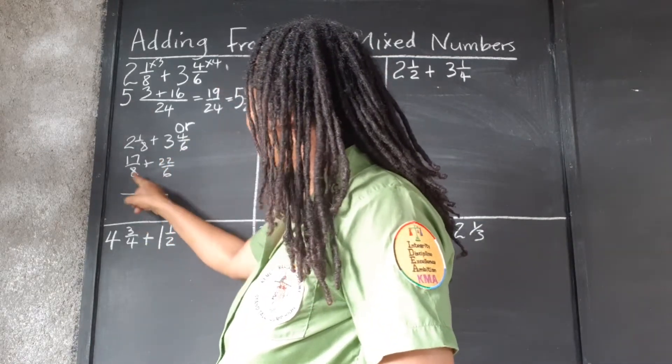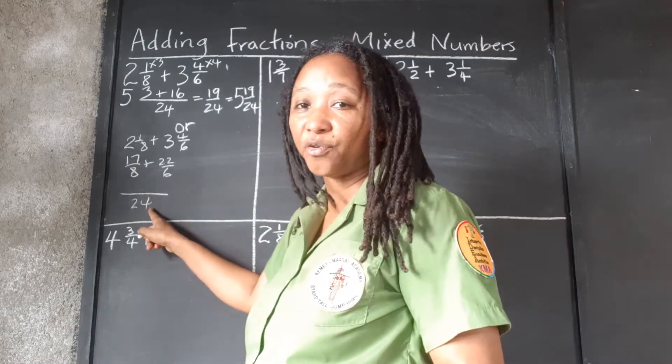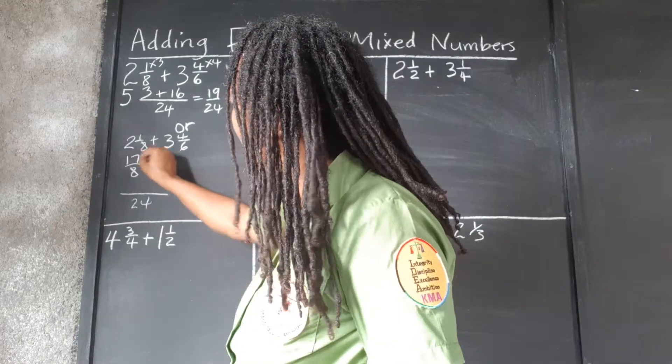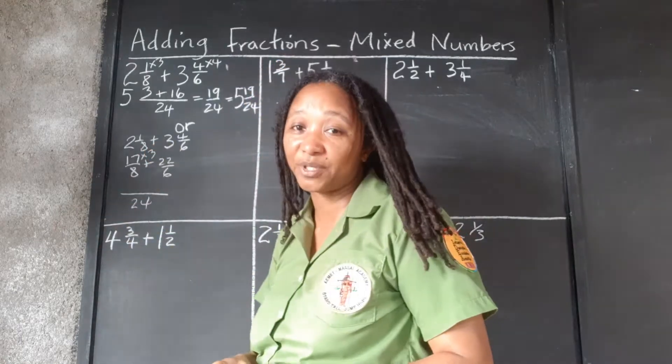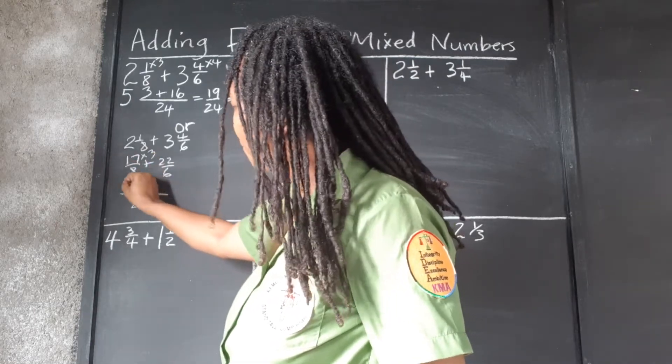Still find the LCM of 8 and 6, which is 24. 8 goes into 24 3 times. Now we're going to multiply 17 times 3. 3 times 7 is 21. 3 times 1 is 3 and 2, 5. That's 51.